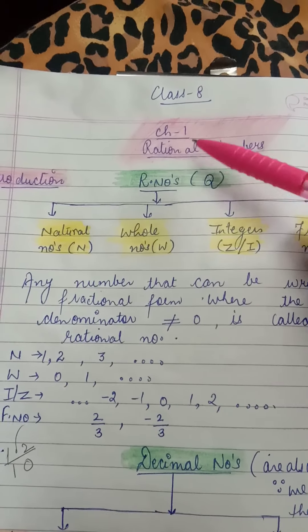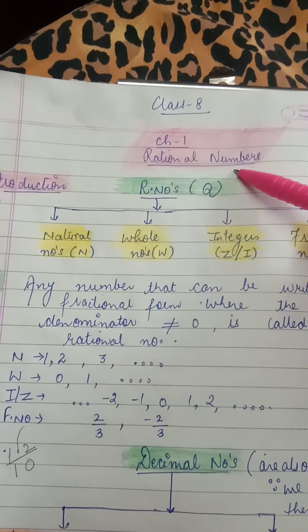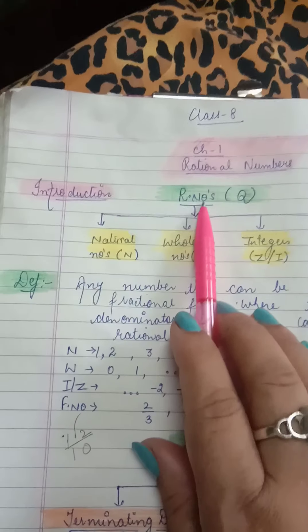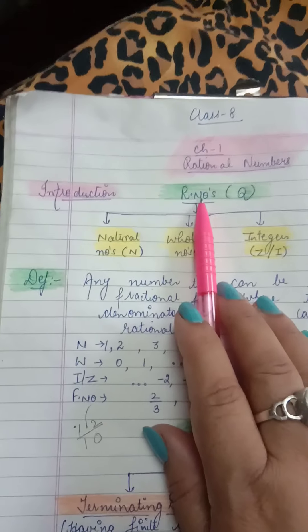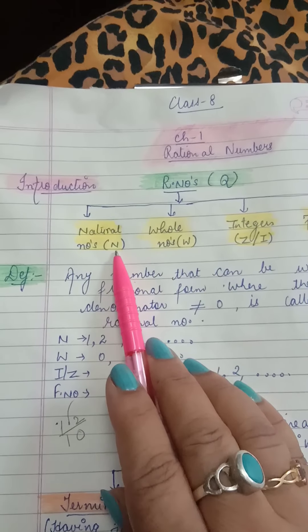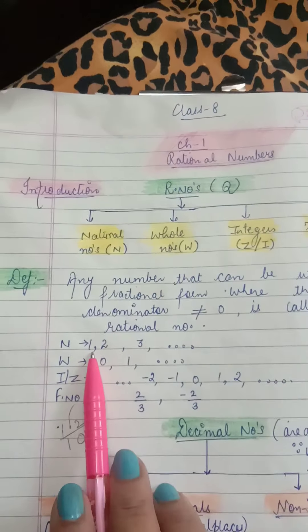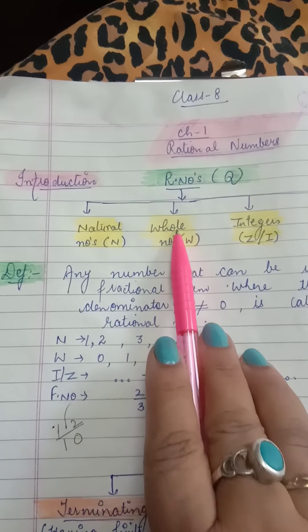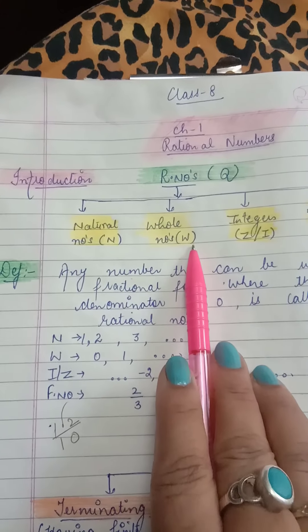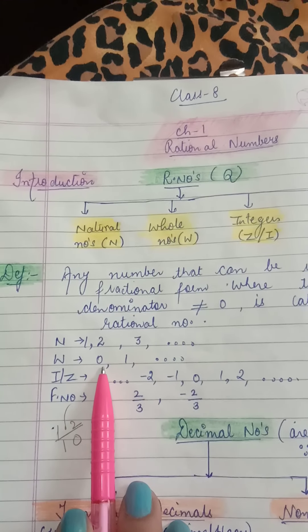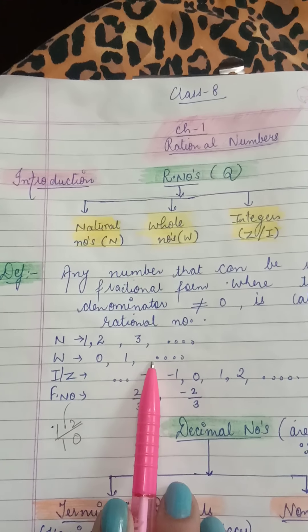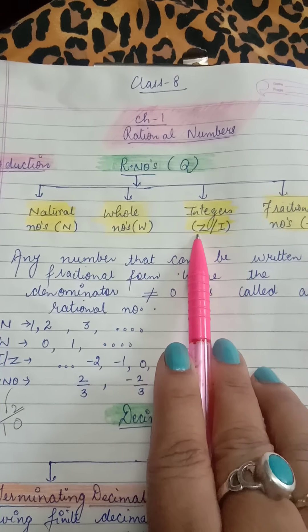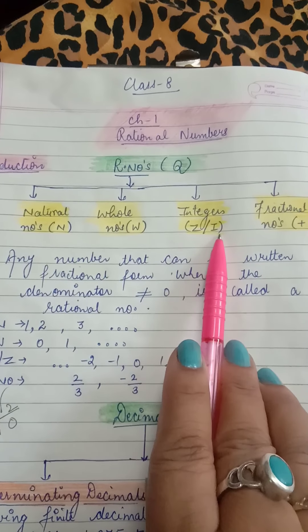Children, let's start with Chapter 1: Rational Numbers — introduction of the chapter. Before we move on to rational numbers, we need to understand a few number types. Natural numbers, denoted by N, are numbers starting with 1, 2, 3 and so on. Whole numbers, denoted by W, are all numbers starting with 0, 1, 2, 3 and so on.